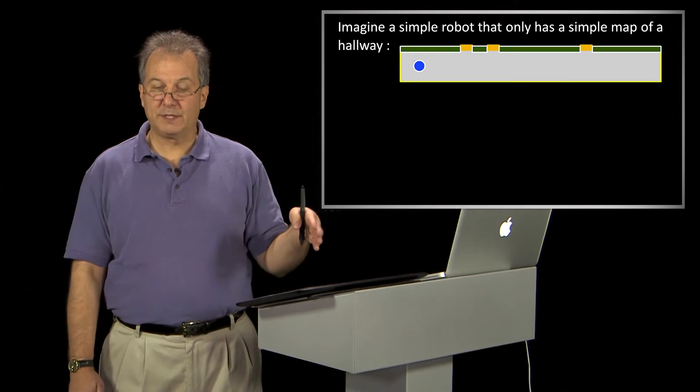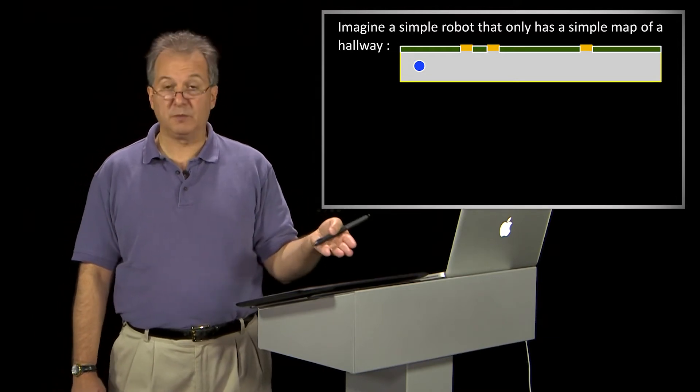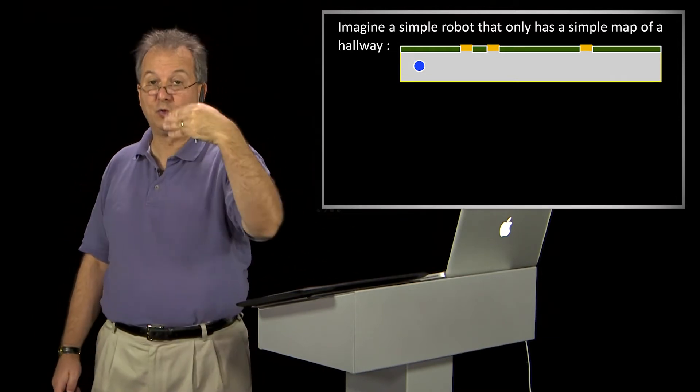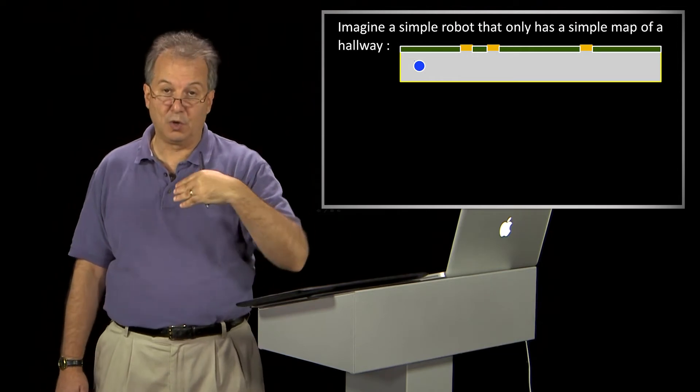so the robot knows this map. And it knows, essentially, where the walls are and where the doors are. And we'll assume that the doors are open.